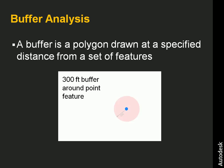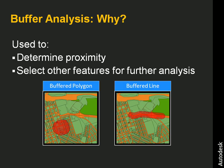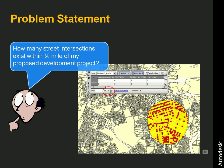A buffer is a polygon drawn at a specified distance from a set of features. The reason we use buffers is to determine proximity, or to select other features for further analysis. So in our example, we want to determine the number of street intersections within a half-mile of a proposed development site. In this next demonstration, we're going to take our CAD drawing of the proposed development, merge that with GIS information such as parcel data and street centerline information, and then create a buffer around this proposed development and use that buffer to determine the number of street intersections within a half-mile of the project.